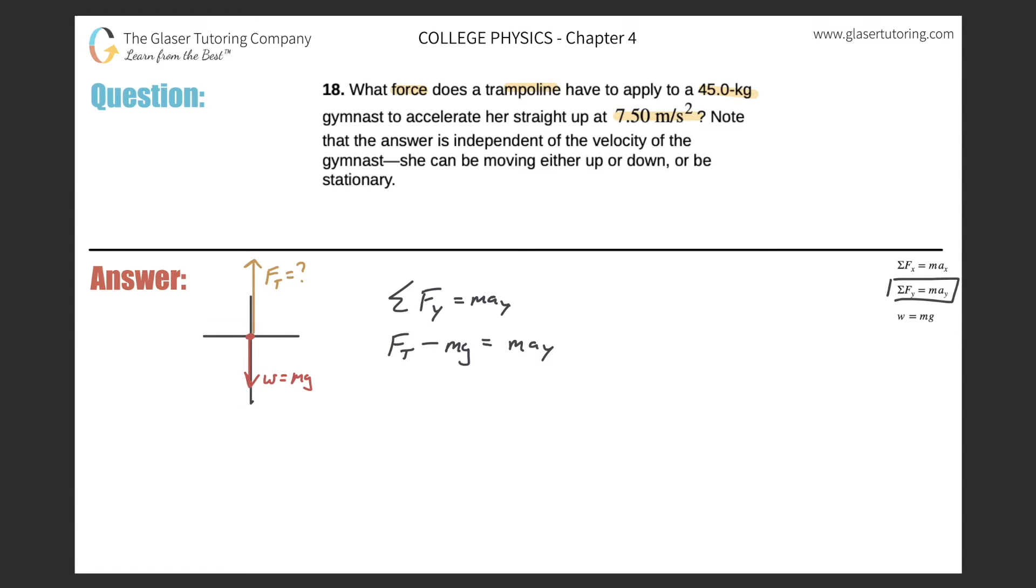Okay, let's start plugging some stuff in. So the force of the trampoline, I don't know. The mass of the gymnast, I do know. It's 45.0. Gravity is 9.81. Oh well, it is in some books. This book, it's 8.0. I keep forgetting.